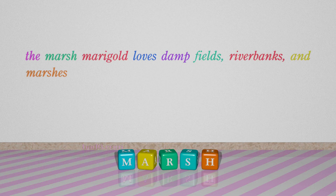For example: The marsh marigold loves damp fields, riverbanks, and marshes.